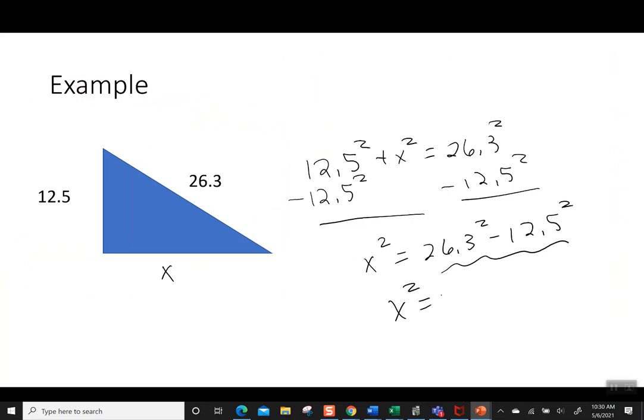So now I have x squared is 535.44. And once again, at this step, we take the square root, we take the square root, and this is going to give us a value for x.